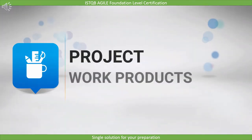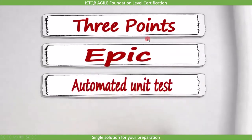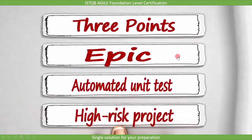In this lecture, we will continue with project work products. Here, I would like to discuss three more points: EPIC, which is a business-oriented work product; creating automated unit tests, which is a work product of development activity; and work products in case of the high-risk project. Let's discuss each of them.